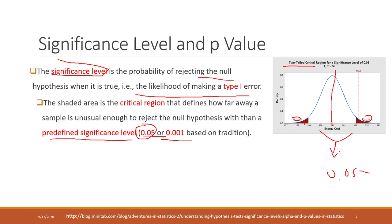For example, this is the PDF of the Virginia energy cost with its mean value. From other data sources, we know the true population mean, and it falls in the significance level region — in the red area. Based on our samples, the probability of seeing that population value is very, very low. Because it falls into our significance level, we can say that our sample mean is statistically different from the population, and that difference is statistically significant.